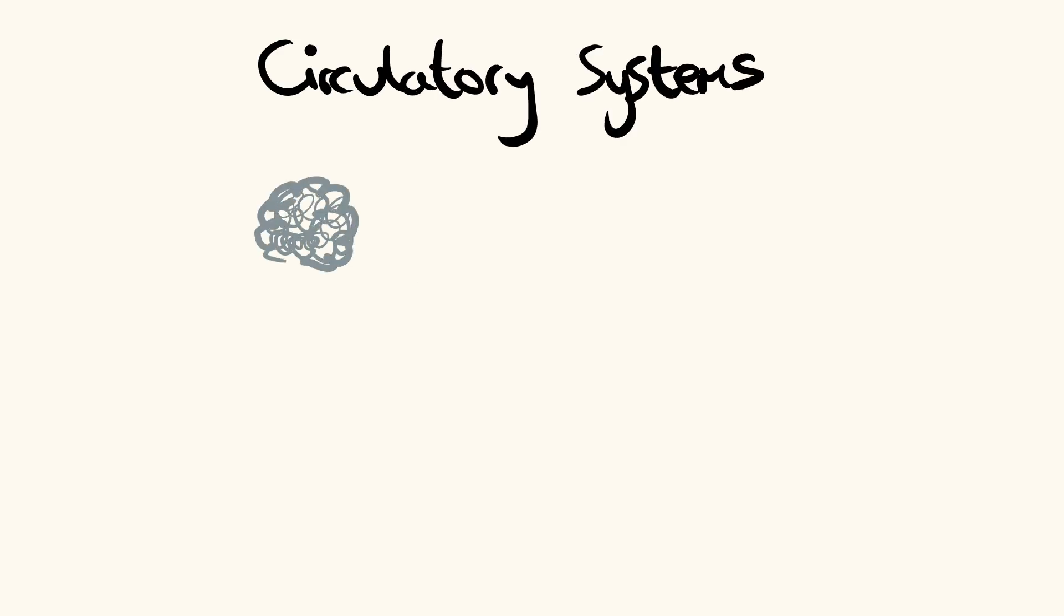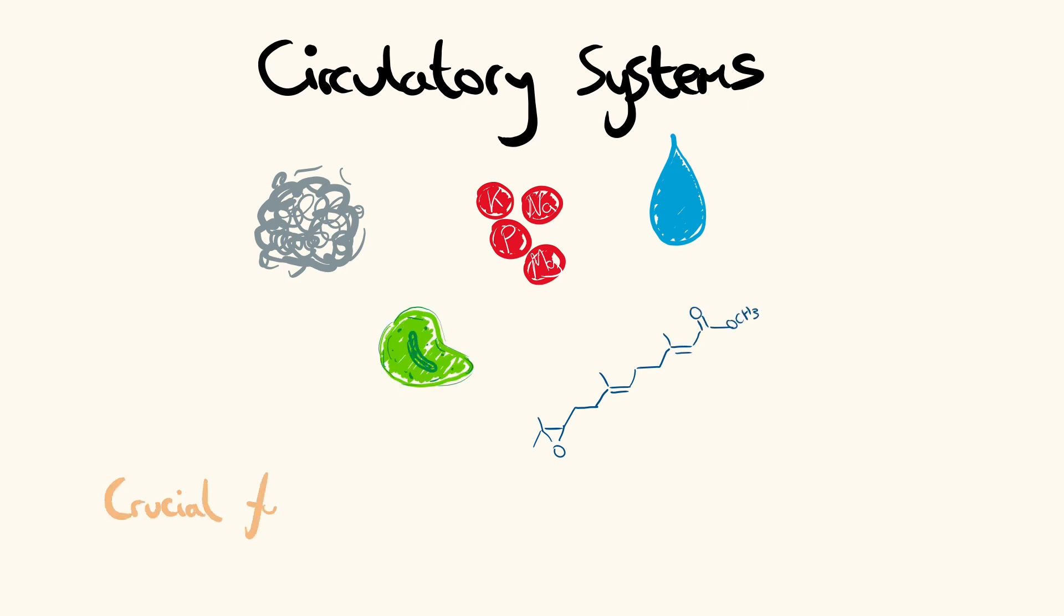Circulatory systems allow for bulk transport of gas, nutrients, waste, water, hormones, and immune cells, allowing for crucial cellular functions to take place.